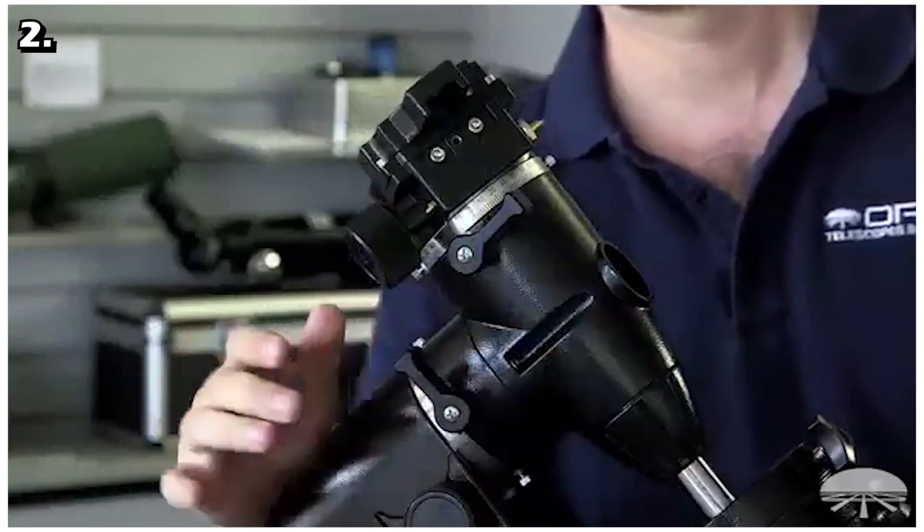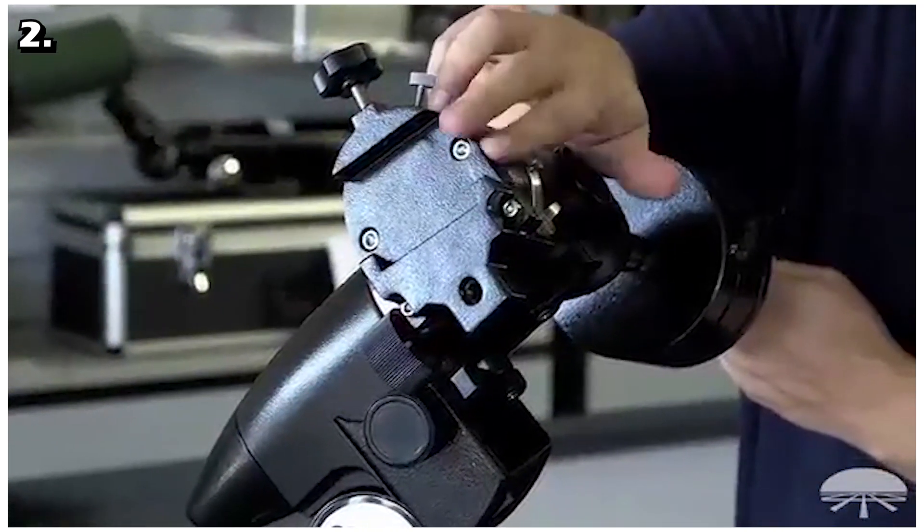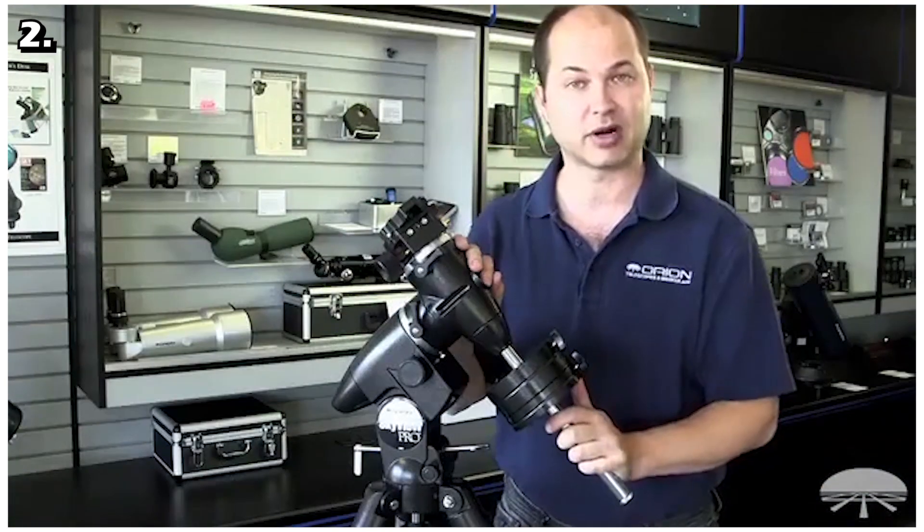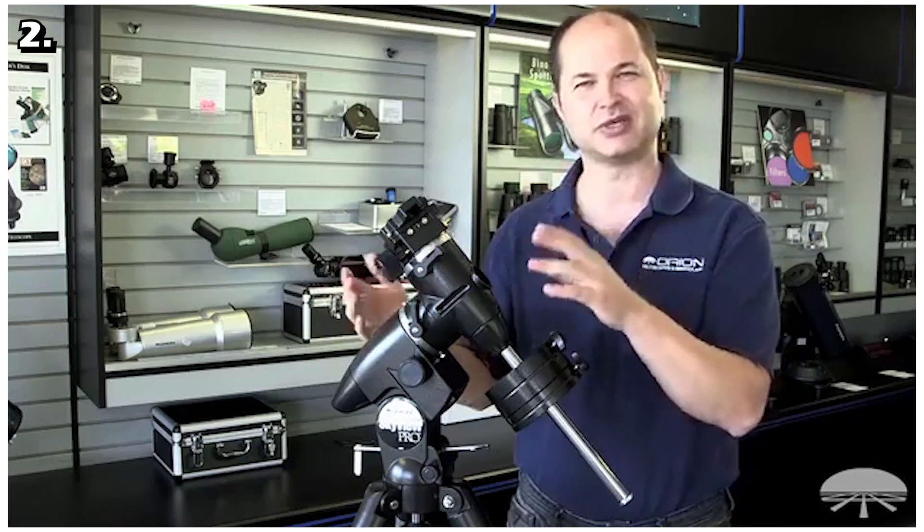The telescope has an 8x40 finder scope. The telescope comes with two different eyepieces, one is a 25mm eyepiece and the other is a 10mm eyepiece. Each eyepiece gives you different magnification. The 25mm gives a 40x zoom while the 10mm gives you a 100x magnification.